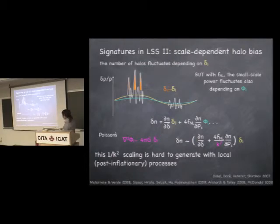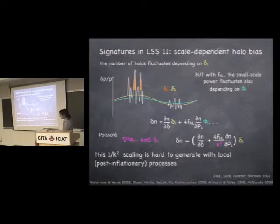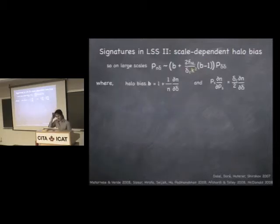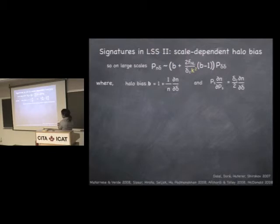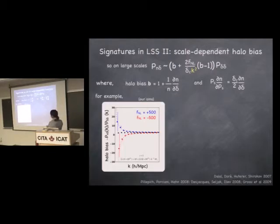I can factor out delta_L here, and I get a term in the bias coefficient which goes like 1 over k squared from Poisson's equation. This is really interesting — this term only shows up when I have primordial non-Gaussianity, it's proportional to f_NL, and it's hard to imagine generating something like this with a local post-inflationary process. A dark matter halo sitting on top of a long wavelength fluctuation shouldn't really be sensitive to the absolute value of the potential — it should care about gradients or curvature. This makes scale-dependent bias a potentially powerful probe. This was originally discovered by Dalal et al. in 2007.